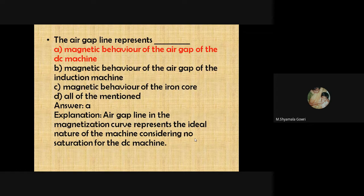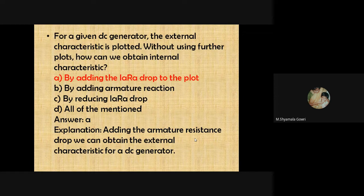The air gap line represents the magnetic behavior of the air gap of a machine. For a given DC generator, the external characteristics is plotted. Without using a further plot, we can obtain the internal characteristics from the external characteristics by adding the armature resistance drop (I_A × R_A).